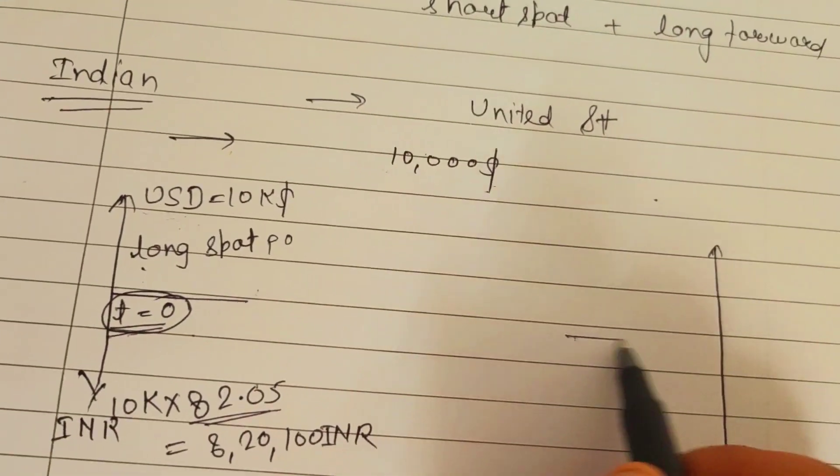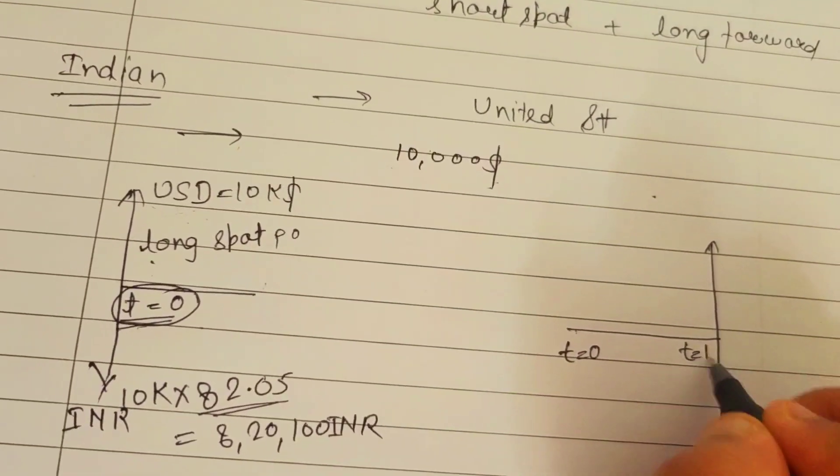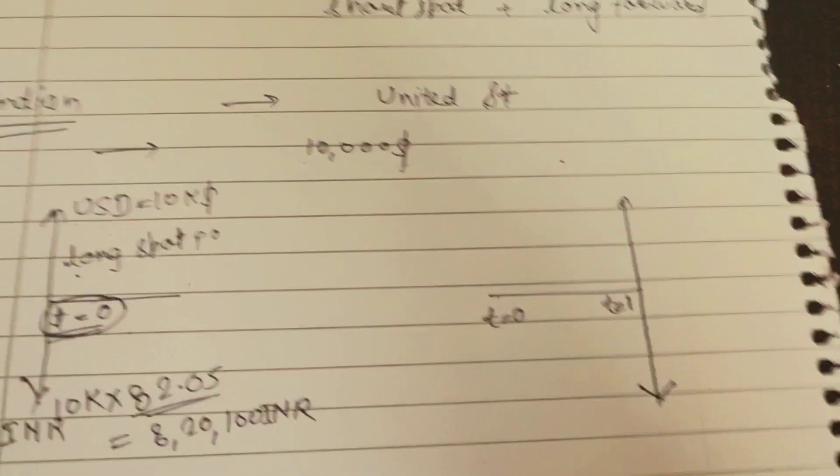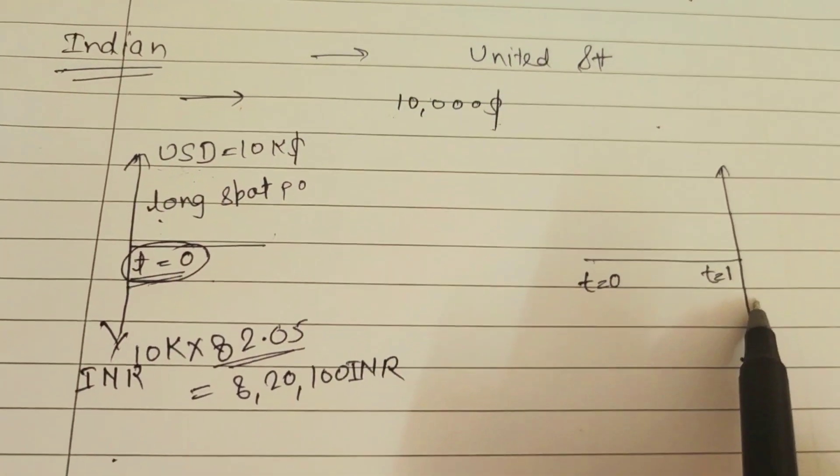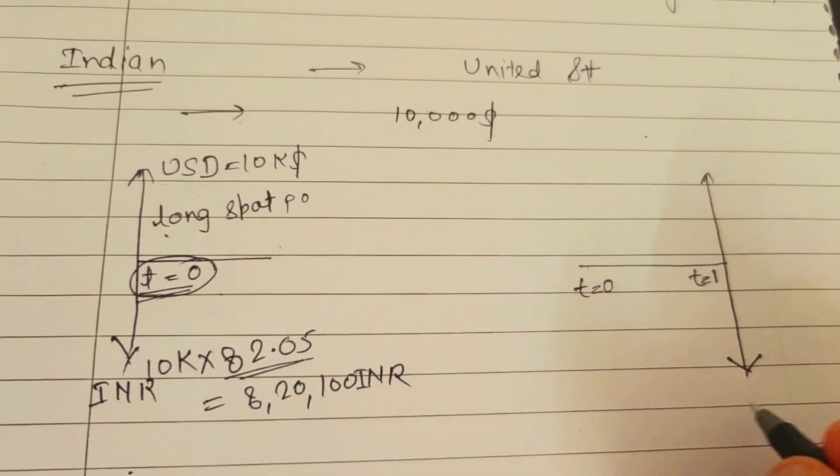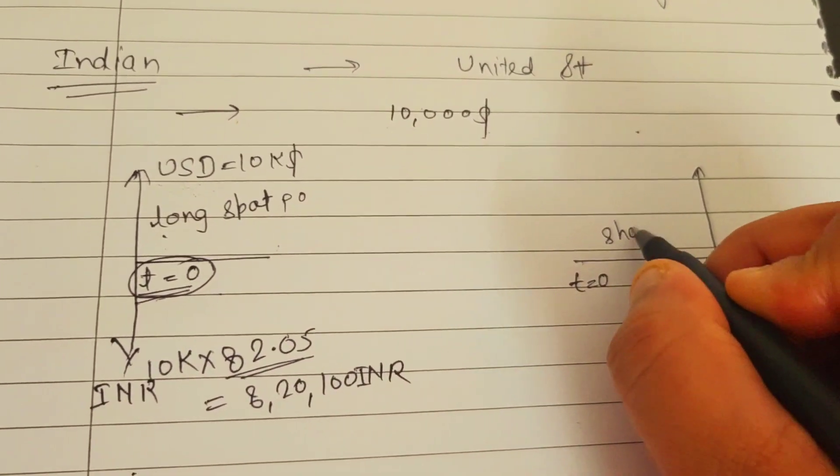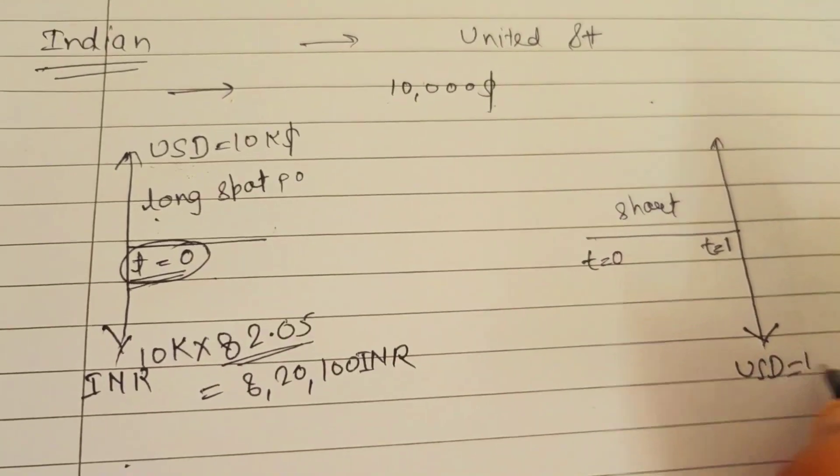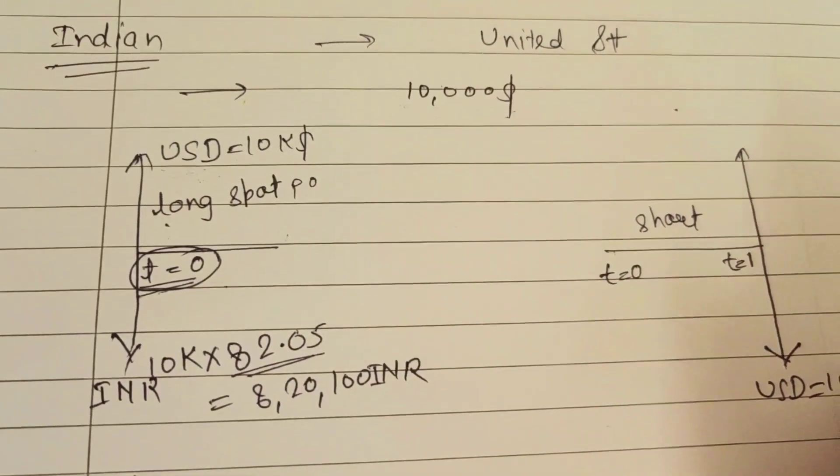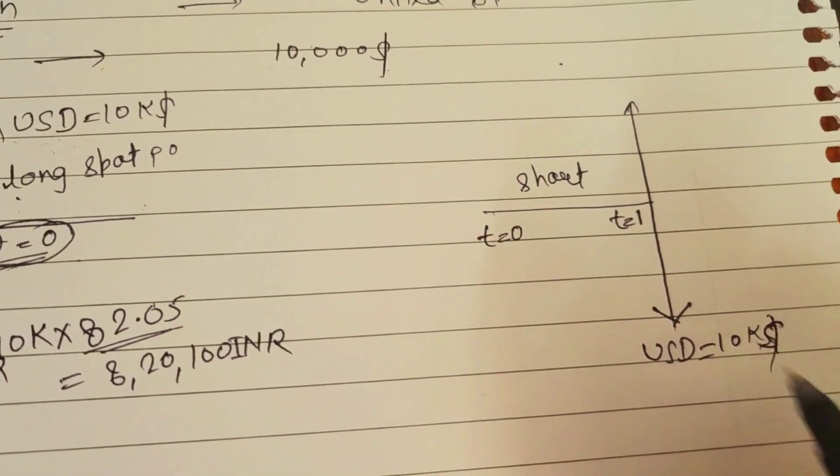Short forward means it's not happening on t=0, it's happening on some future date. This was t=0 and we've come into a contract for an expected future date. At this point, this Indian person is not trying to buy USD, he's trying to sell it. He is selling the same amount, 10k dollars.